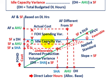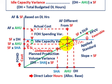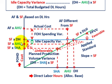The idle capacity variance is where we look at our actual hours used, intersecting with our applied standard line, versus the denominator hours. You're looking at the difference between your blue line — your overall fixed cost — versus what you have for your applied standard. So standard fixed rate times actual hours used versus standard fixed rate times total denominator hours — that's your idle capacity variance.